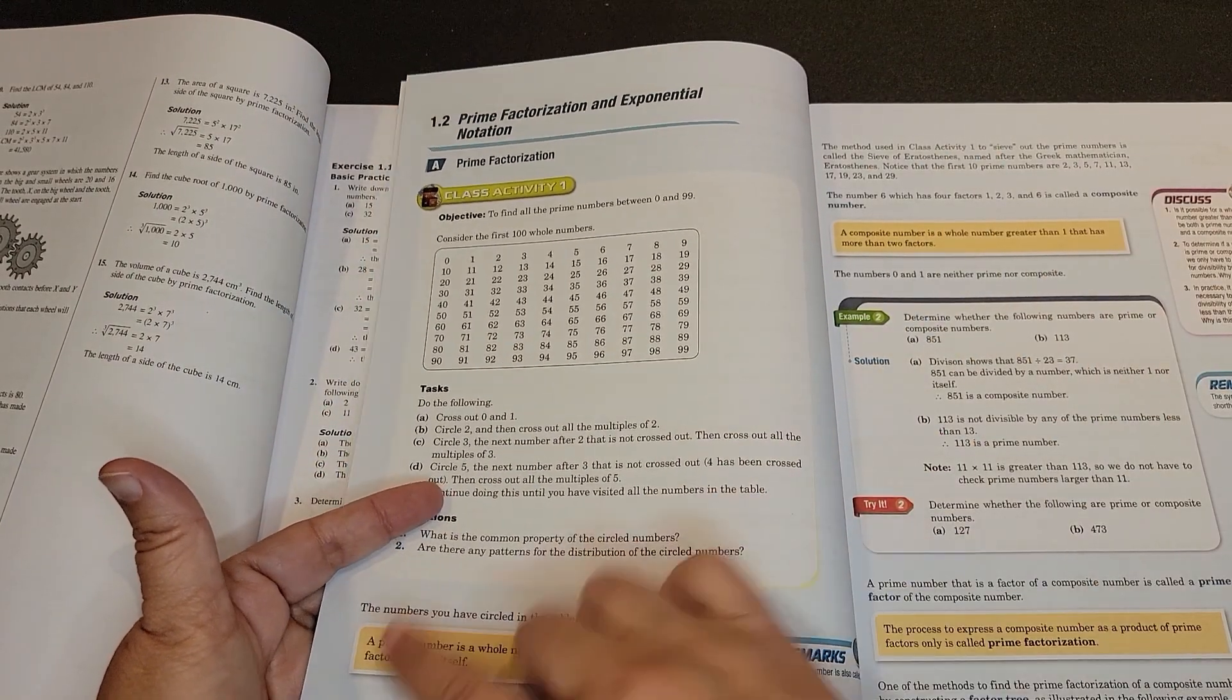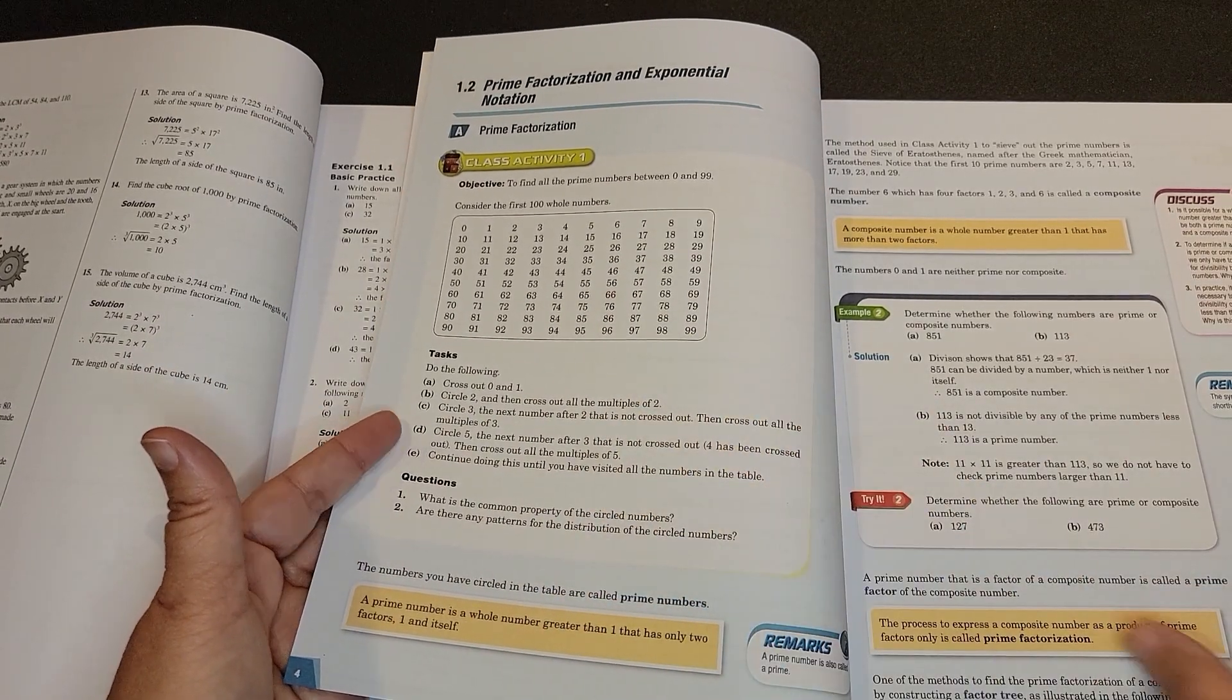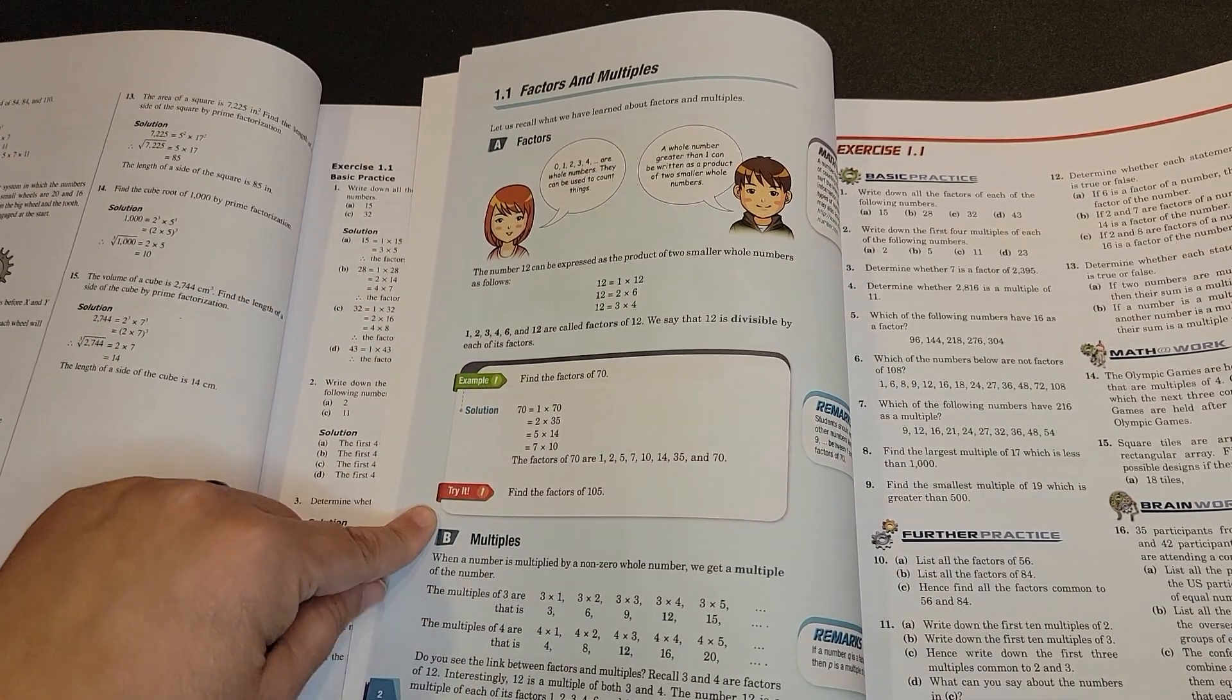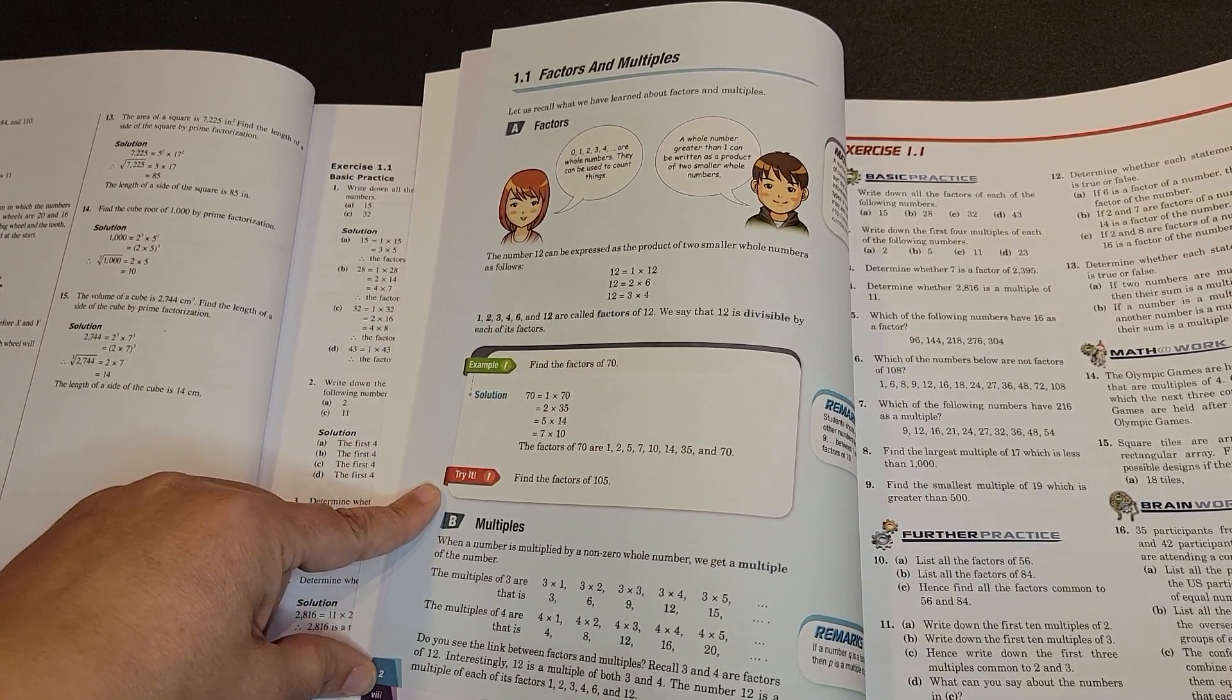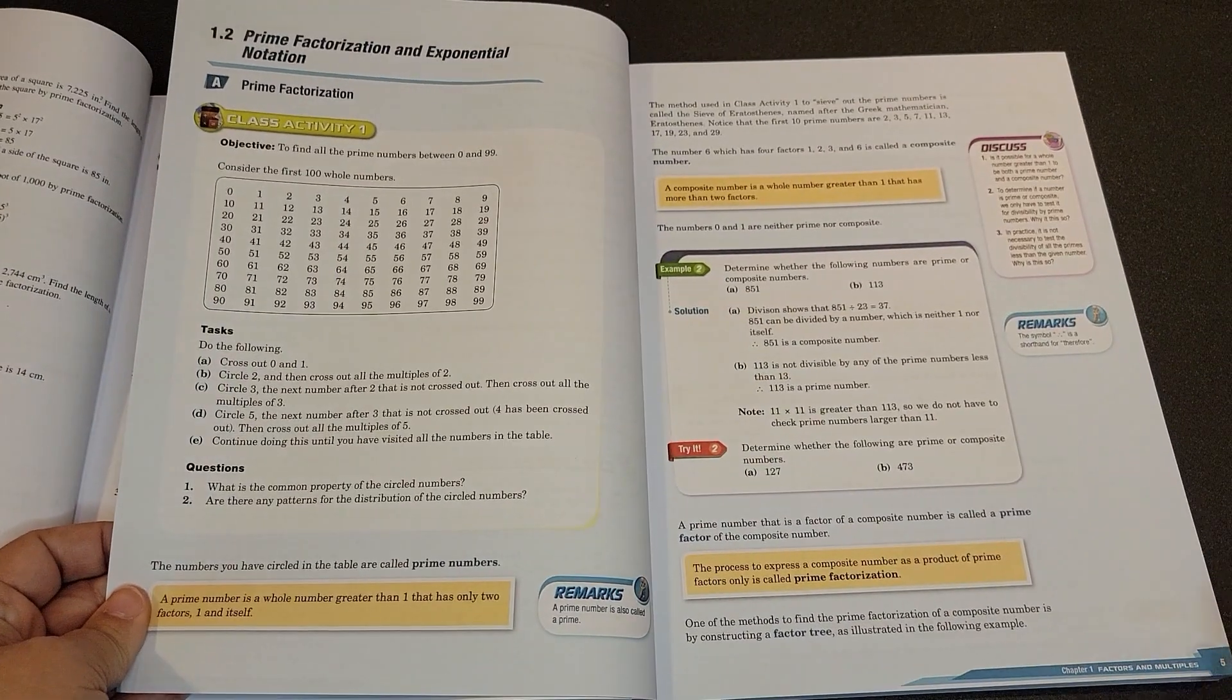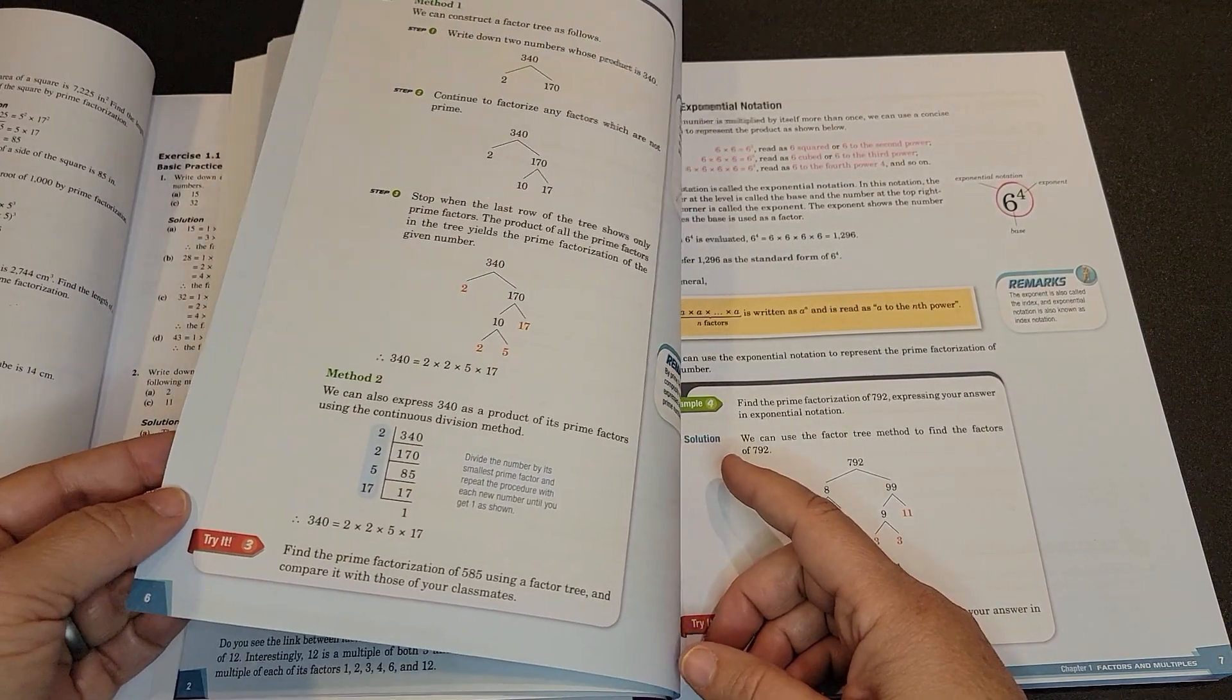Then after you do the class activities, it will come back and it will give you these examples. And so this is on page two. The next thing you're going to do is do example two, which is on page five. And then you'll do example three, which is on page six, et cetera. Once it goes through all of the examples of the chapter, then it comes back and shows you all of the exercises.